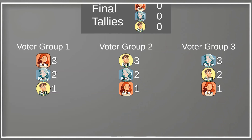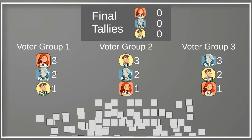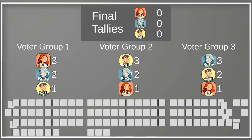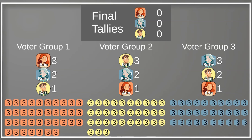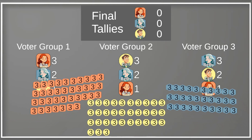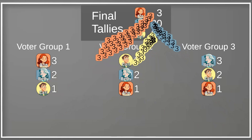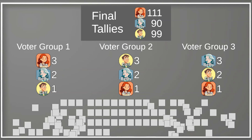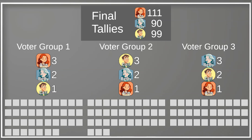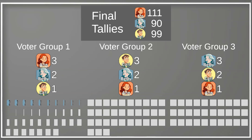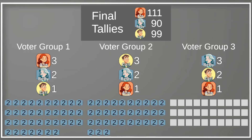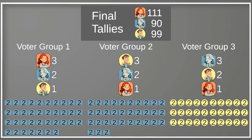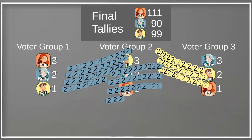With our 100 voters, first we have all of them assign 3 points to their favorite candidate. Voter group one each give 3 points to Anne, everybody in voter group two gives Carl 3 points each, and everybody in group three gives Betty 3 points. Next, we have them give 2 points to their second favorite candidate. Group one gives 2 points to Betty, group two does the same since Betty is their second choice as well, and voter group three gives 2 points to Carl. We add all of these points to the running totals.